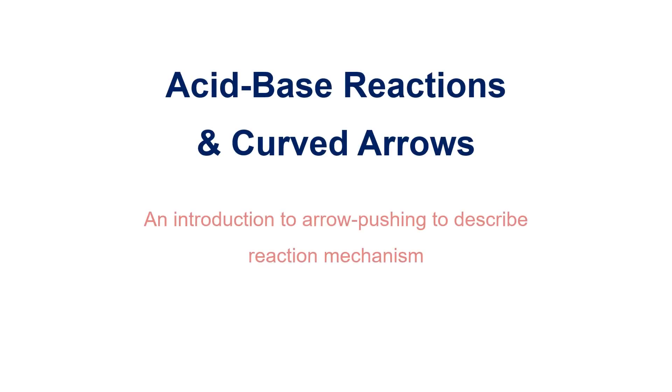Here we will use acid-base reactions as a simple introduction to using curved arrows to describe electron movement in organic mechanism.